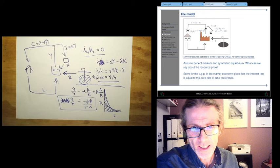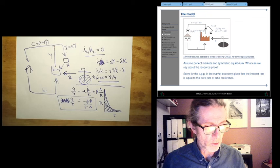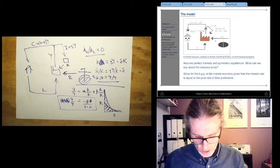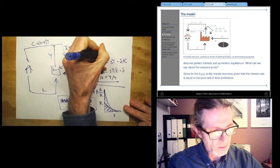But there's a bunch of problems with this when we look at reality, because in reality resource extraction is going up, it's not declining. According to this it should decline gradually from the start, but actually we know it's going up and GDP is not declining, GDP is going up as well. So what is the problem?